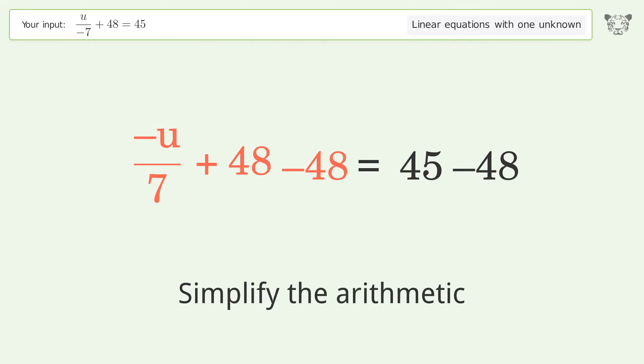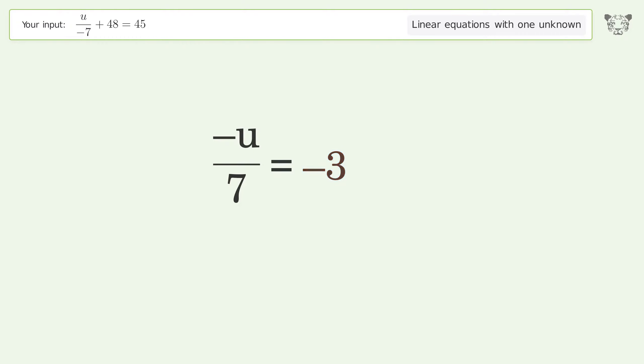Simplify the arithmetic. Isolate the U. Multiply both sides by 7.